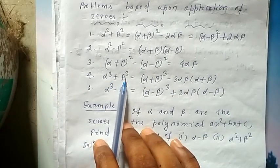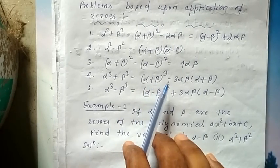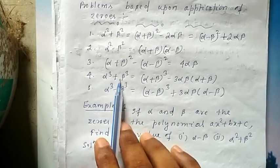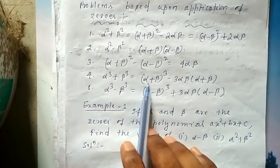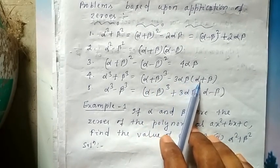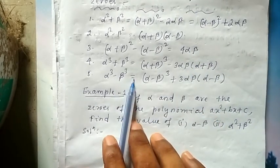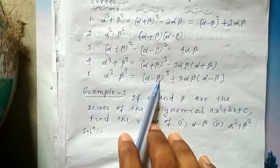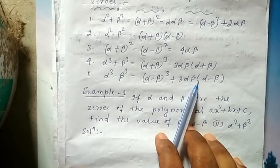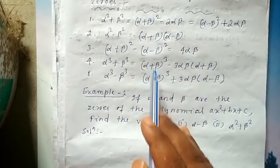Again, the a³+b³ formula: a³+b³ = (a+b)³ - 3ab(a+b). Similarly, α³+β³ = (α+β)³ - 3αβ(α+β). Again, α³-β³ = (α-β)³ + 3αβ(α-β). Remember, these formulas are very much useful.